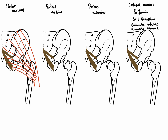Not all fibers go towards the iliotibial tract — some pass towards the posterior surface of the femur, specifically onto what's known as the gluteal tuberosity. About 25 percent or a third of the muscle fibers pass onto this gluteal tuberosity on the posterior surface of the femur.